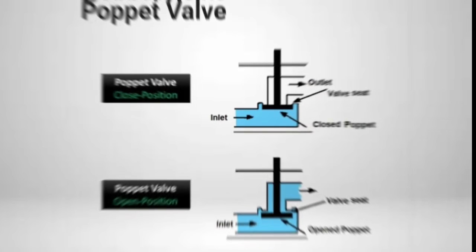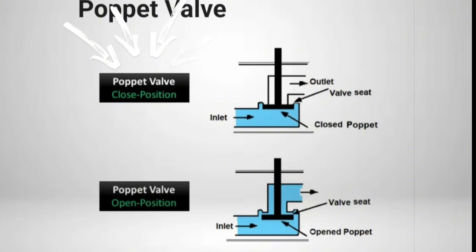In some valves, the poppets are held in seated positions by springs. The number of poppets in a valve depends on the purpose of the valve used.